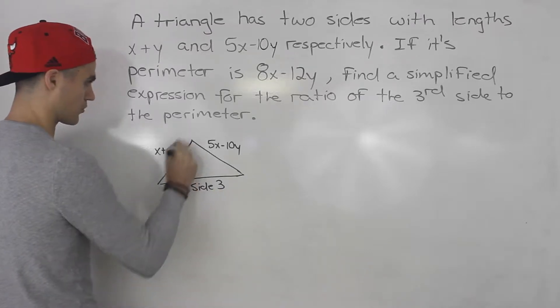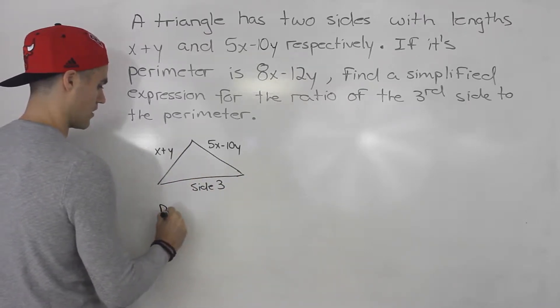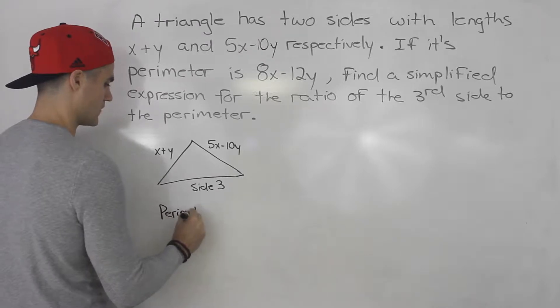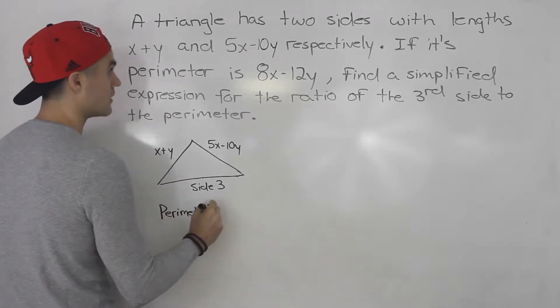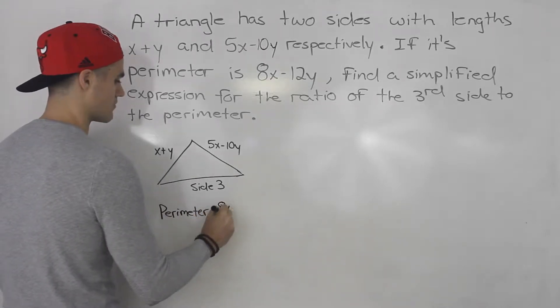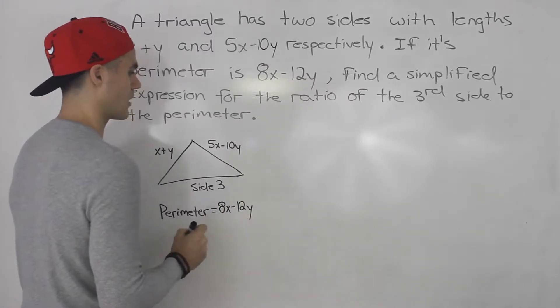And then we're told the perimeter of this triangle is 8x minus 12y.